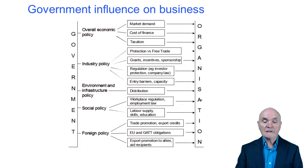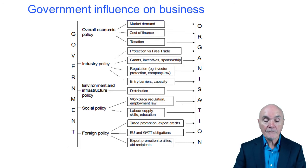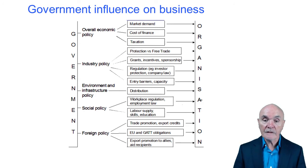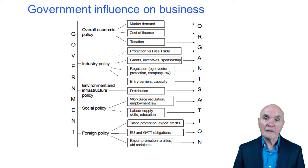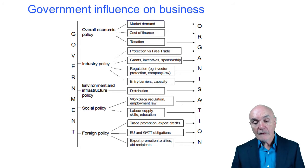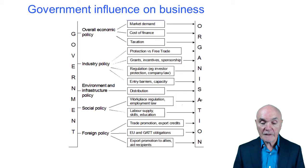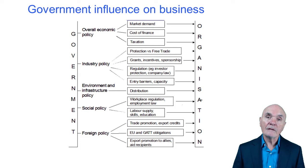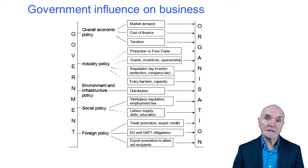The government's overall economic policy will influence market demand. We'll see later that if the government were to reduce interest rates, it means that more people are willing to borrow, and usually once you borrow you spend, and therefore this stimulates the demand in the economy. The cost of finance is connected with interest rates as well — if interest rates are low, it means it's relatively cheap for businesses to raise loan capital and to invest in new machinery, new factories, and expansion of the business.